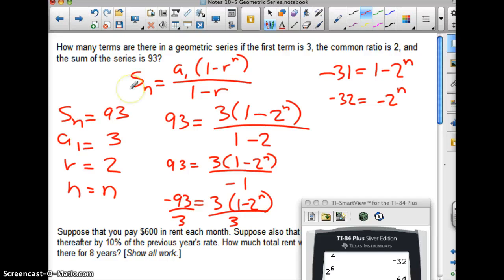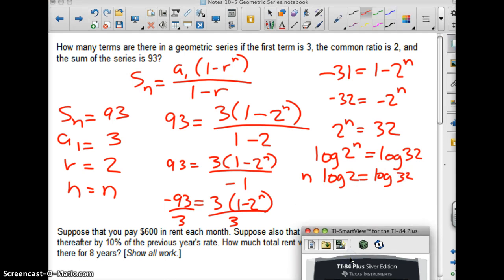I can subtract 1 from both sides. I get negative 32 equals negative 2 to the n. Which gives me, I'm going to move these guys so I have 2 to the n equals 32. There we go. Take the log of both sides. Log of 2 to the n equals log 32. And then use my power rule. n log 2 has to be equal log 32.